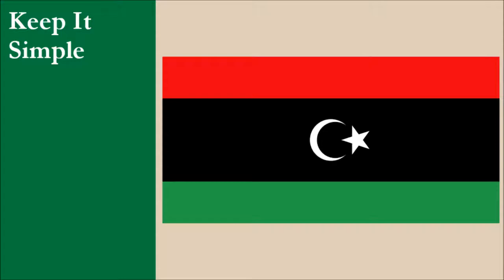The flag consists of a horizontal tricolor of red, black, and green. The black stripe is double the width of each of the other two stripes. The flag is charged with a white crescent and star. Overall, this is a pretty simple design. The position, shape, and size of the crescent and star design might be a little tricky to get exactly right, however. For this principle, the flag scores 9 out of 10.